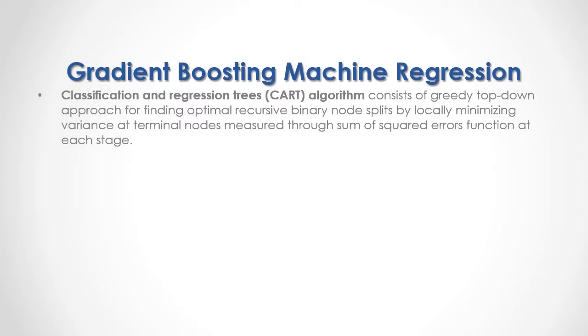Classification and Regression Trees algorithm consists of a greedy top-down approach for finding optimal recursive binary node splits by locally minimizing variance at terminal nodes, measured through the sum-of-squared-errors function at each stage.